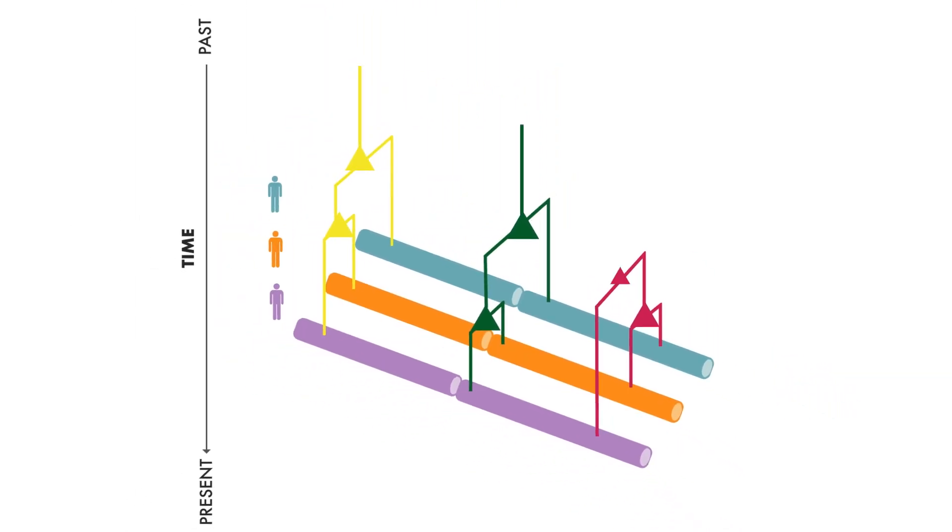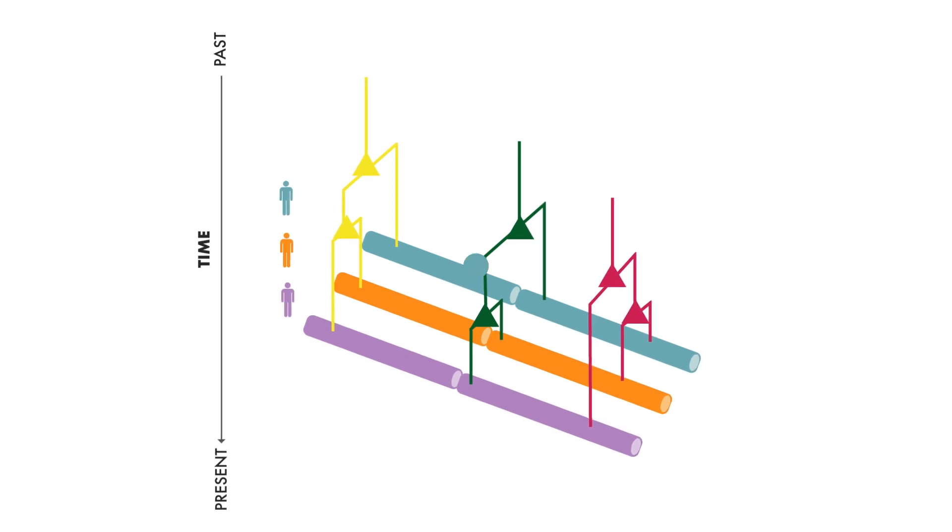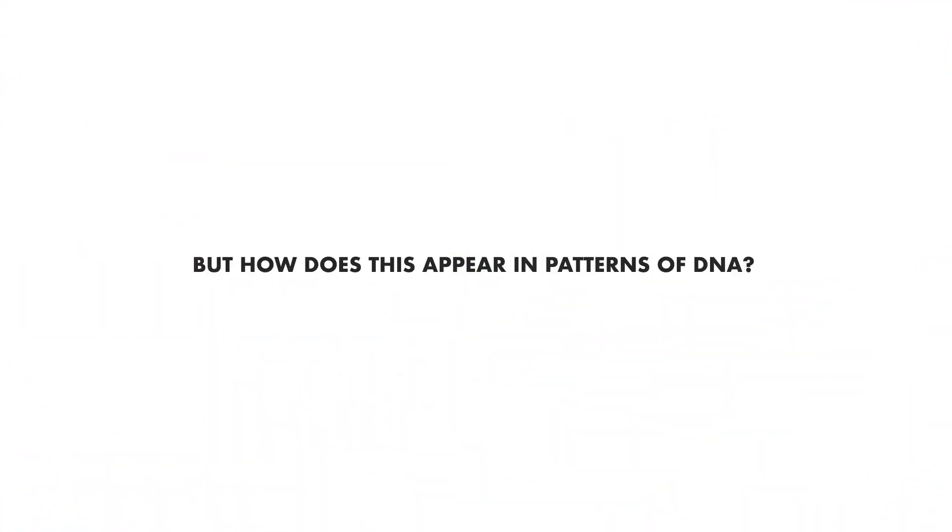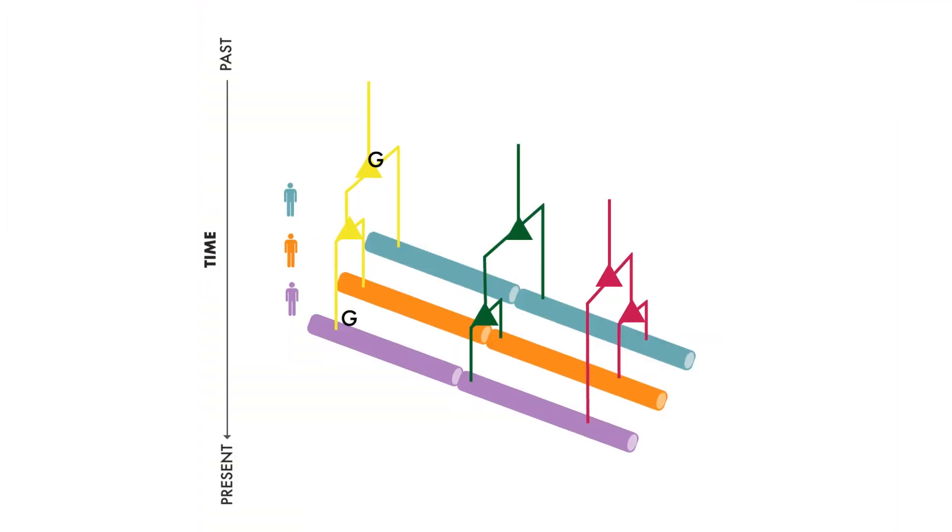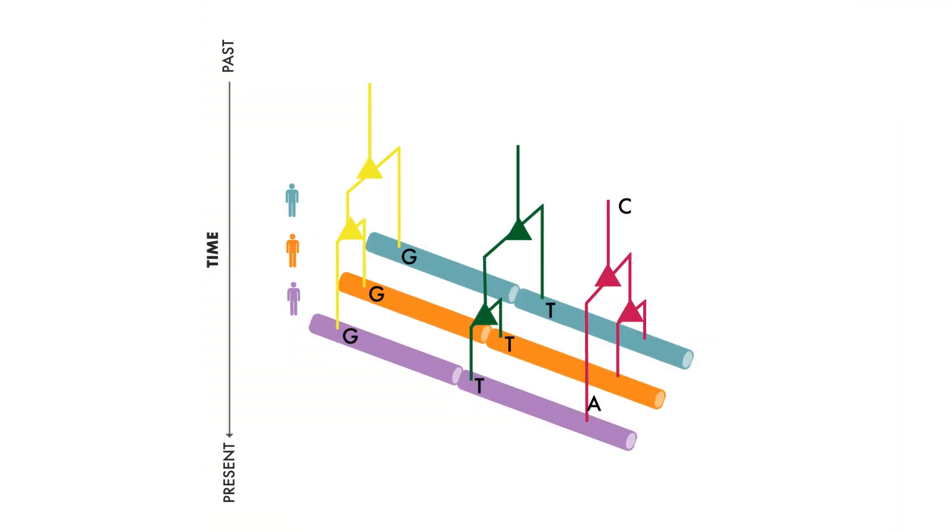If we look at different locations in the genome, there will be different histories. But how does this appear in the patterns of DNA? We only observe sequences of DNA, as shown at the tips of these trees.